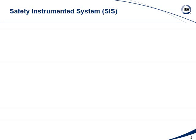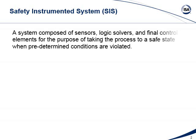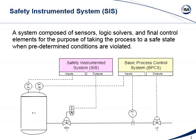First, a basic definition: what is a safety instrumented system? It is a system that consists of sensors, a logic solver, and final elements designed to take the process or the equipment to a safe state if certain conditions are violated.